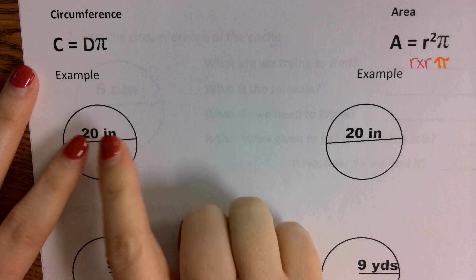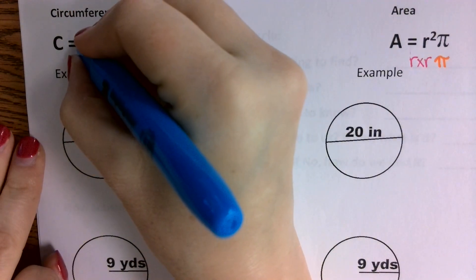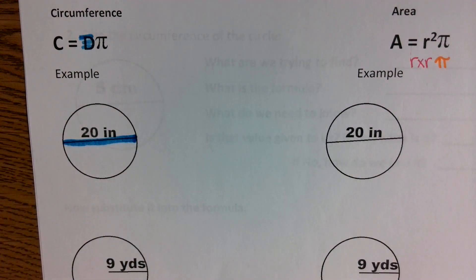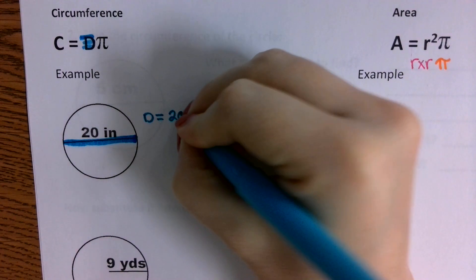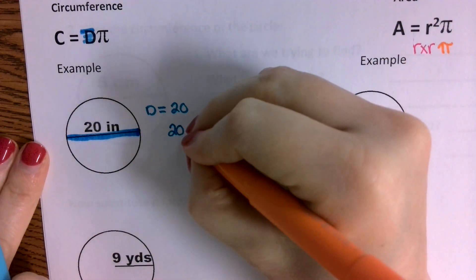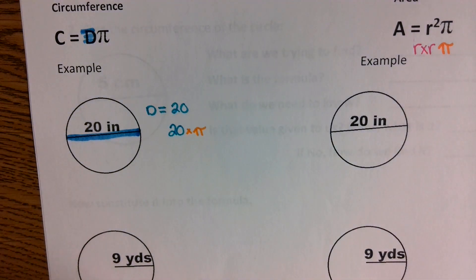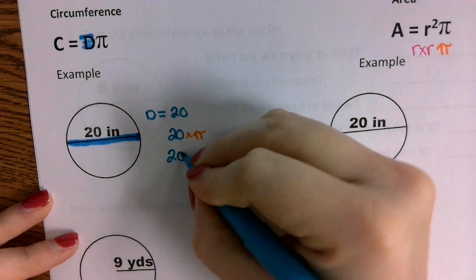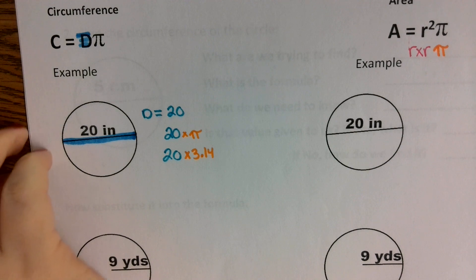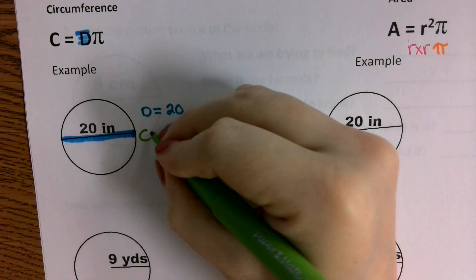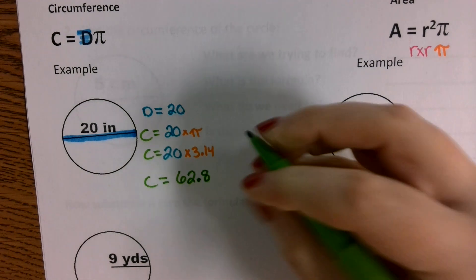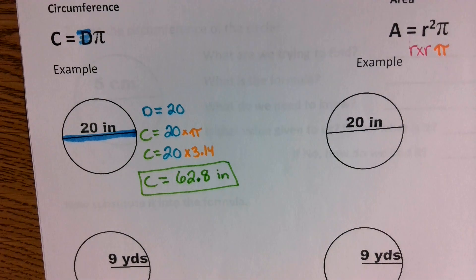If I'm finding circumference, the value I need is the diameter. Here I am given my diameter's measurement — my diameter is equal to 20. So in my formula, I'm going to take 20 and multiply it by pi. I'm going to take the diameter and multiply it by pi, so I'm going to take 20 and multiply it by 3.14. That's going to come out as my circumference — circumference is found by taking diameter times pi. My circumference is going to come out to 62.8 inches.